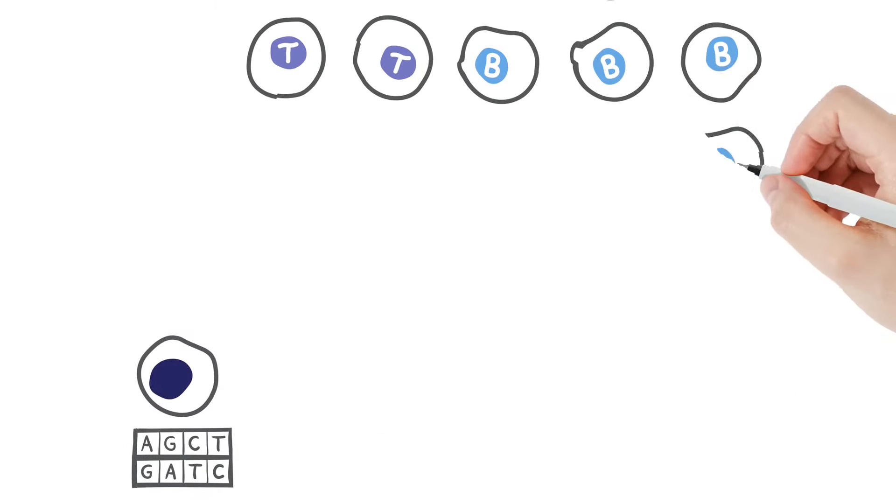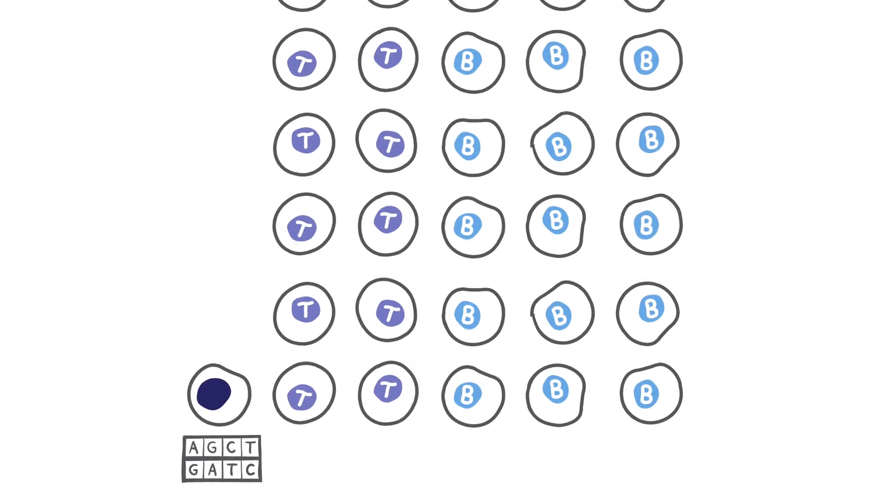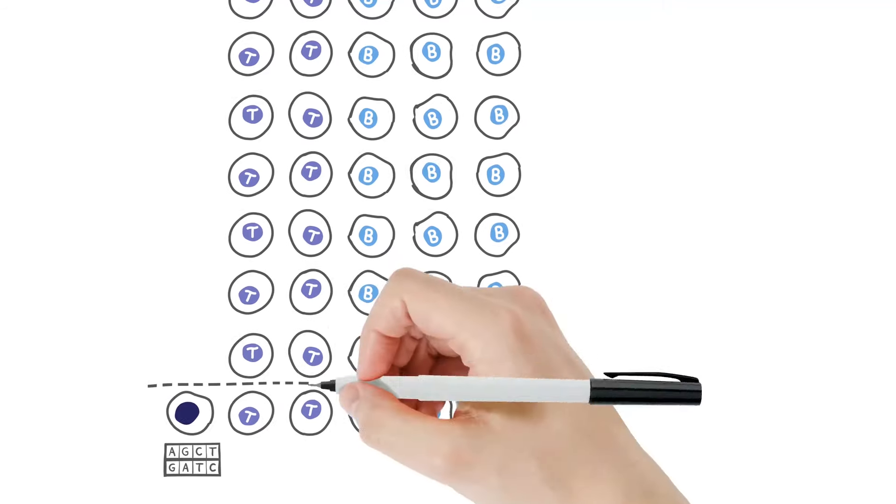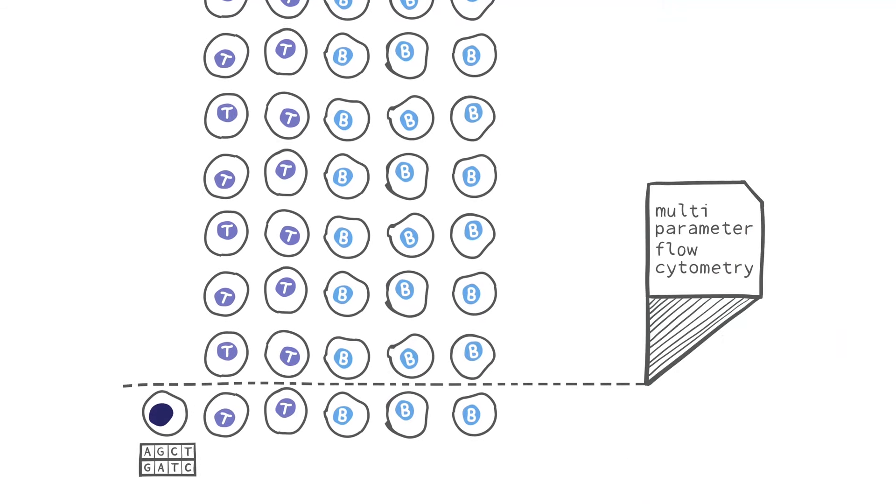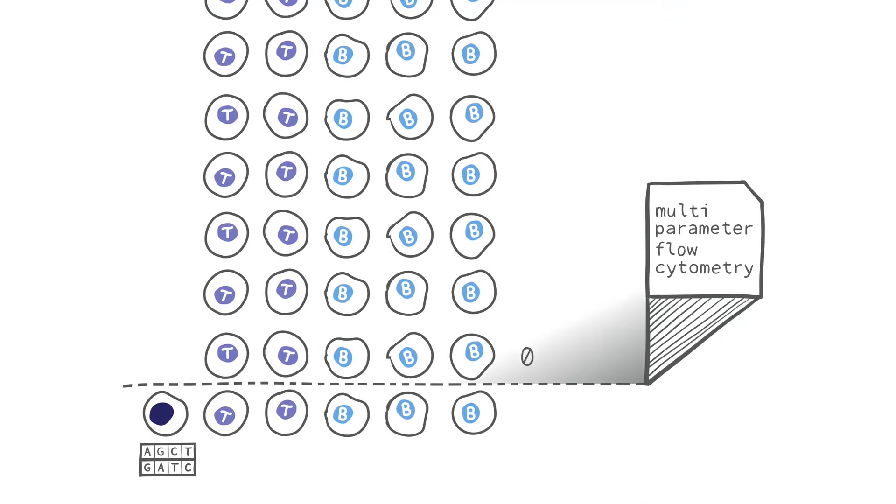In some cases, a particular clone of interest might only exist at a very low frequency. Less sensitive techniques, like multi-parameter flow cytometry, can overlook its presence.